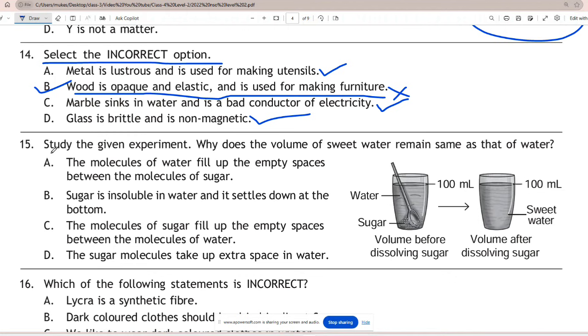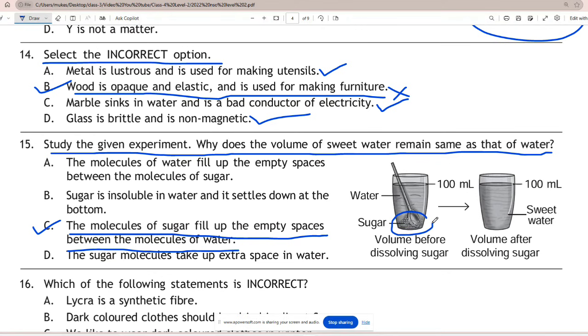Question 15: Study the given experiment. Why does the volume of sweet water remain same as that of water? The correct answer is option C. When you add sugar to a glass of water and stir it, the sugar molecules essentially fill the spaces between the water molecules, causing the water level to remain the same because the sugar is not adding additional volume to the liquid, but rather occupying existing spaces between water molecules.